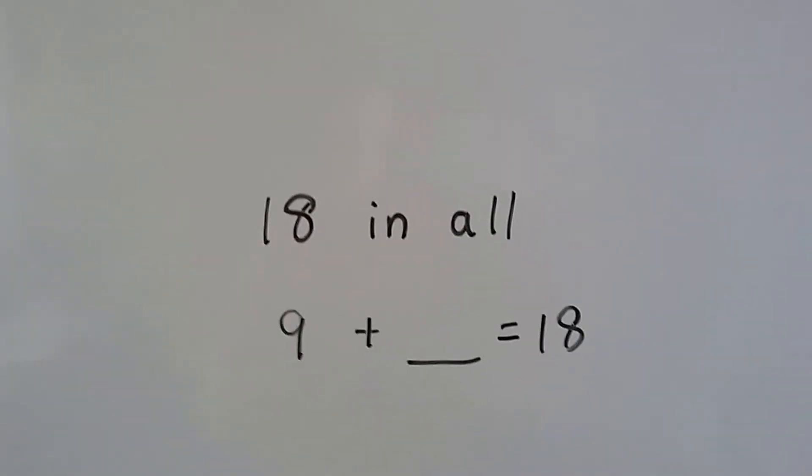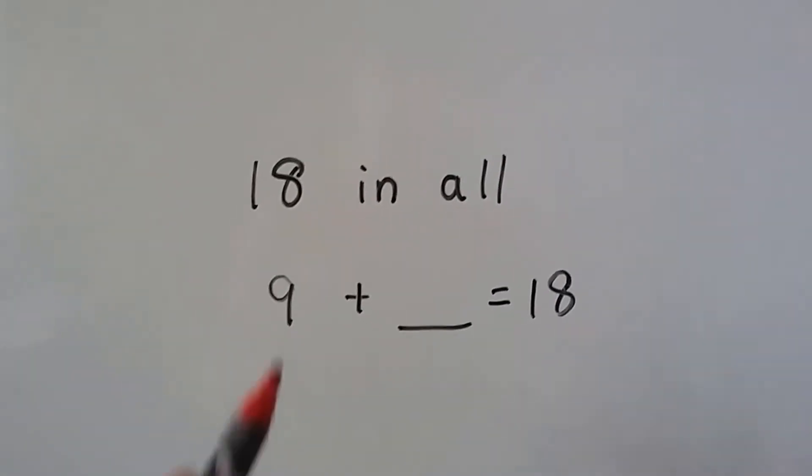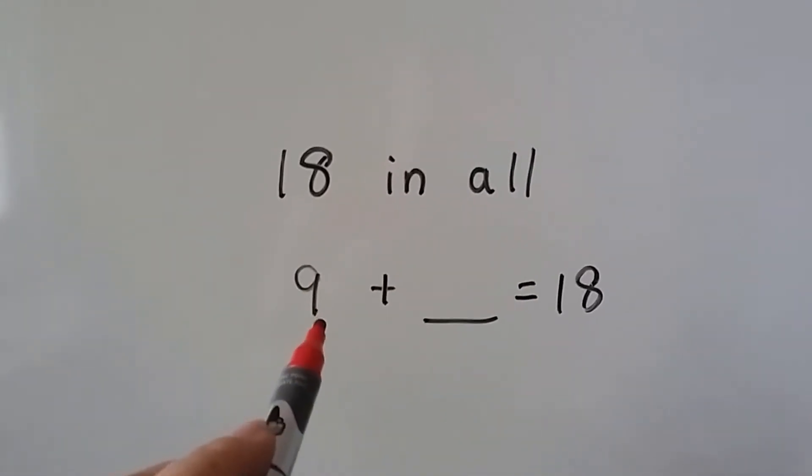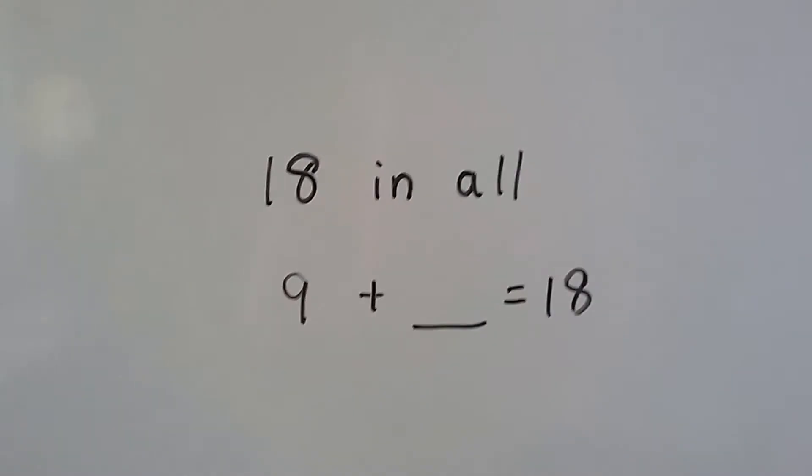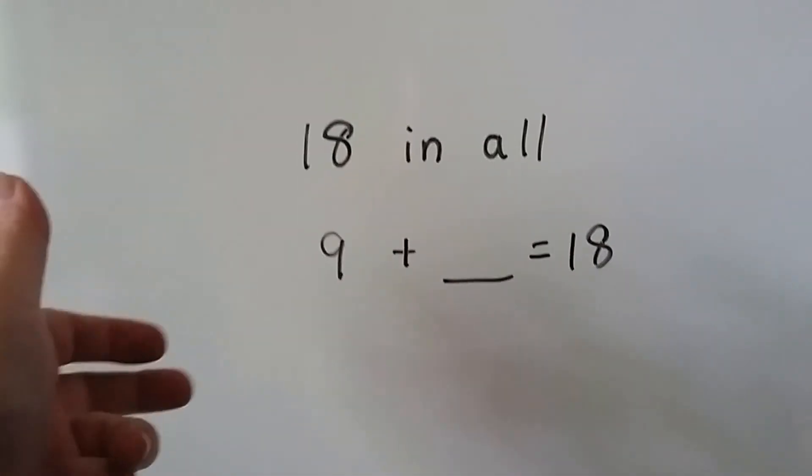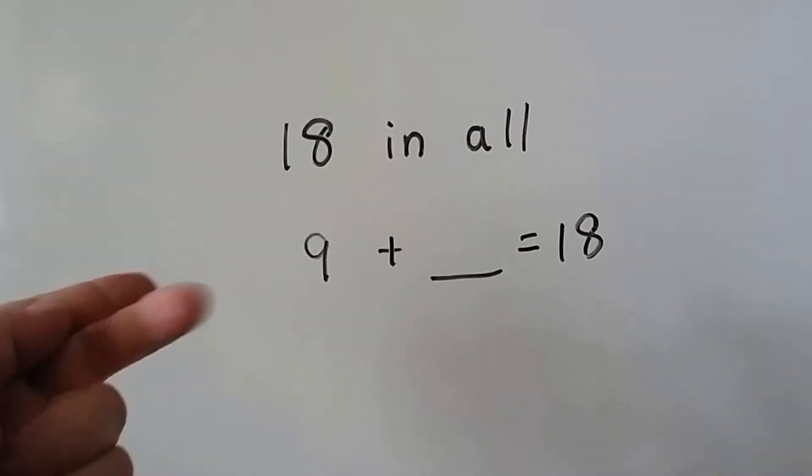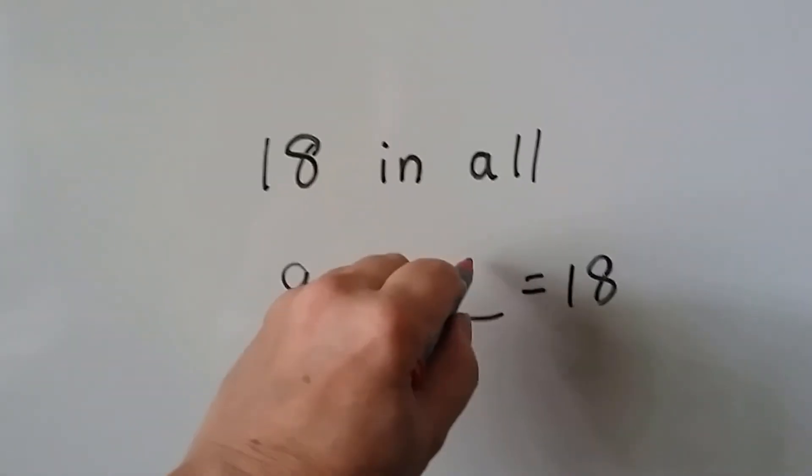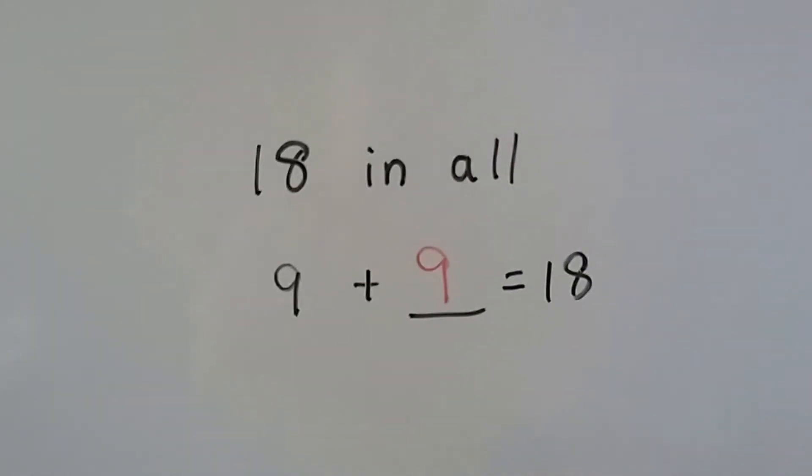We're going to try it again. There's 18 in all. We have 9 plus something equals 18. We're going to start at the 9 and count up to 18. 9, 10, 11, 12, 13, 14, 15, 16, 17, 18. That was 9. So 9 plus 9 equals 18.